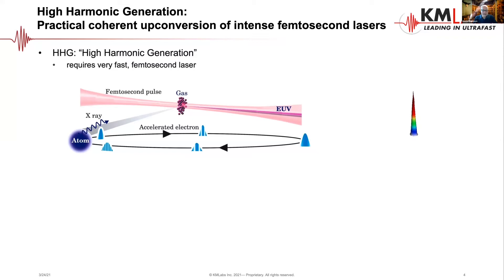If that happens, you can end up with electrons that go through a boomerang trajectory: they ionize at the peak of the electric field of the laser, then the electron wave function starts to accelerate in the electric field. But since it's a laser field, which oscillates, at some point that electron gets driven back into the vicinity of the parent ion.